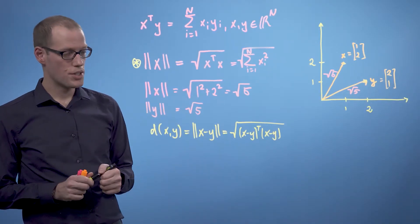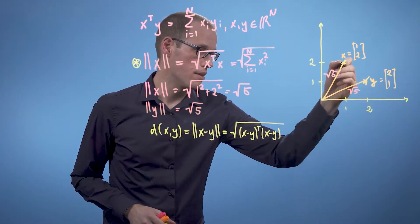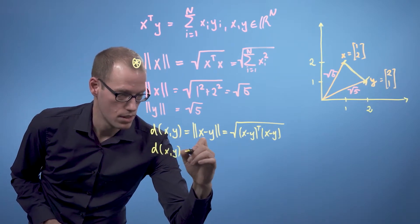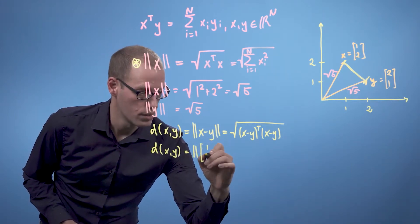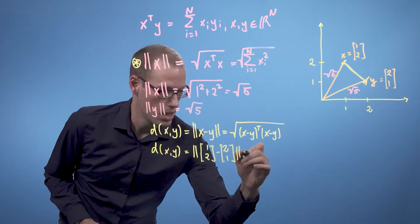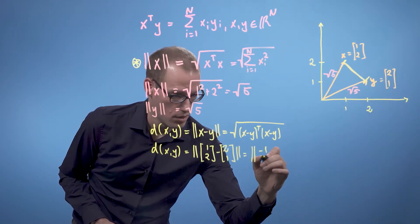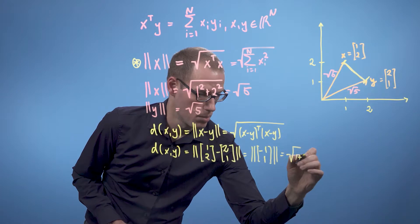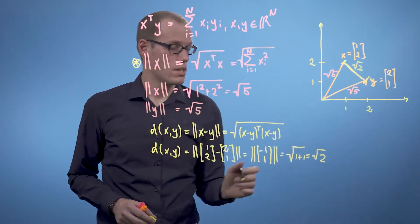So now let's compute the distance between our two vectors over here. The distance between these two vectors is effectively just the length of this difference. So we can write this as the norm of (1, 2) minus (2, 1). So this is our difference vector, and that is the norm of (-1, 1). And this is the square root of 1 plus 1, which is the square root of 2. So the length of this yellow segment is square root 2.